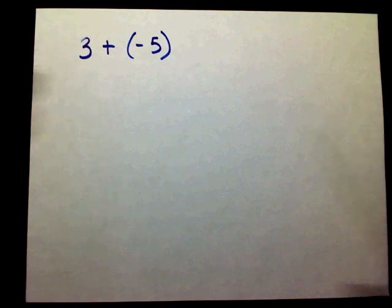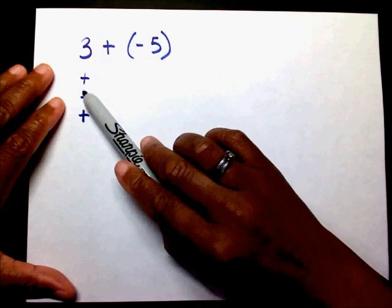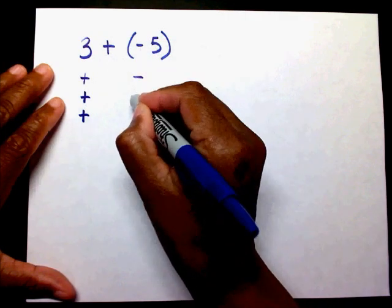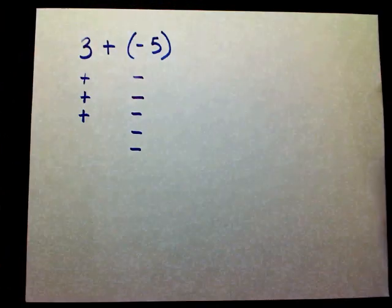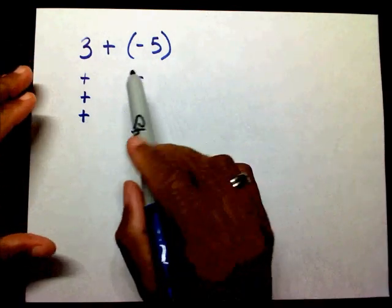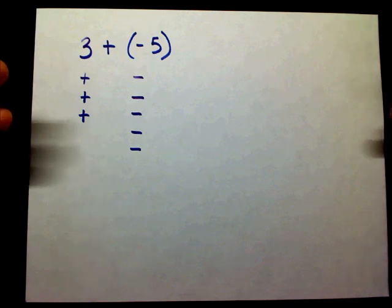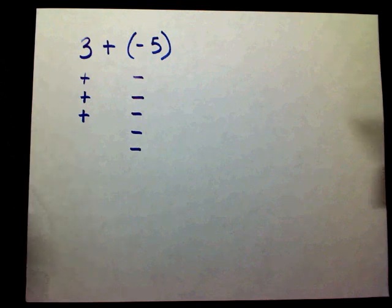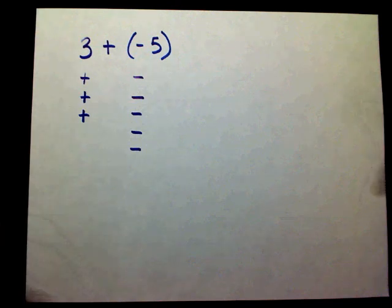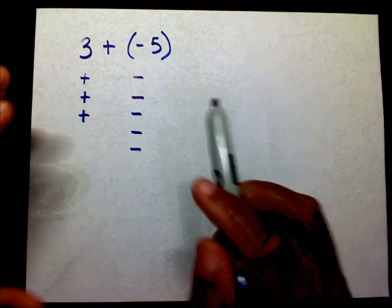When you add things or any objects, you put things together. Since this is a positive three, I'm going to write three positives, and I'm going to add to this positive three five negatives. Now when I put these positives and these negatives together, you'll notice they create something called a zero pair. For instance, if you put a positive one next to a negative one, that equals zero. If you have a positive five next to a negative five, that equals zero. If I have a negative twenty next to a positive twenty, that equals zero, because they cancel each other out. So what we want to do is create as many zeros as we can.